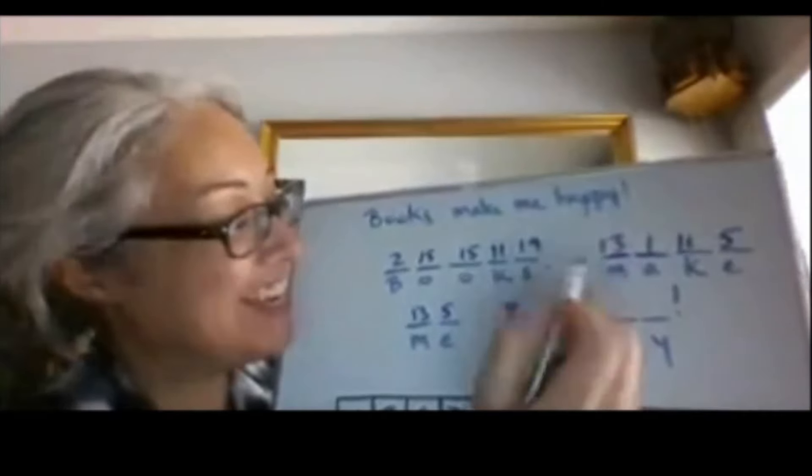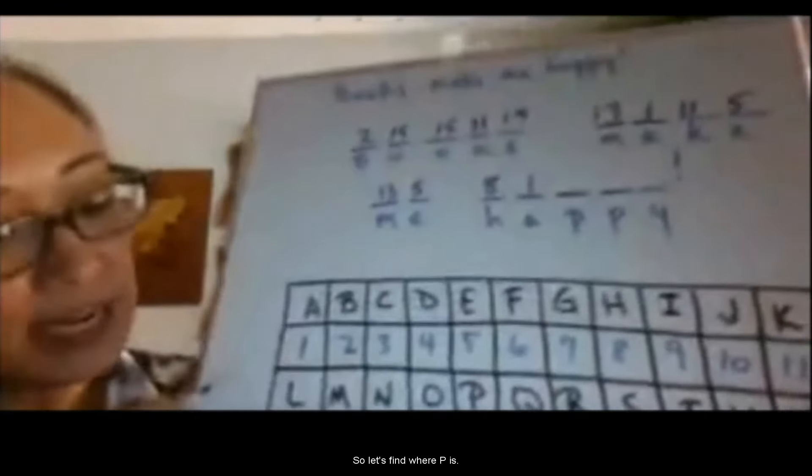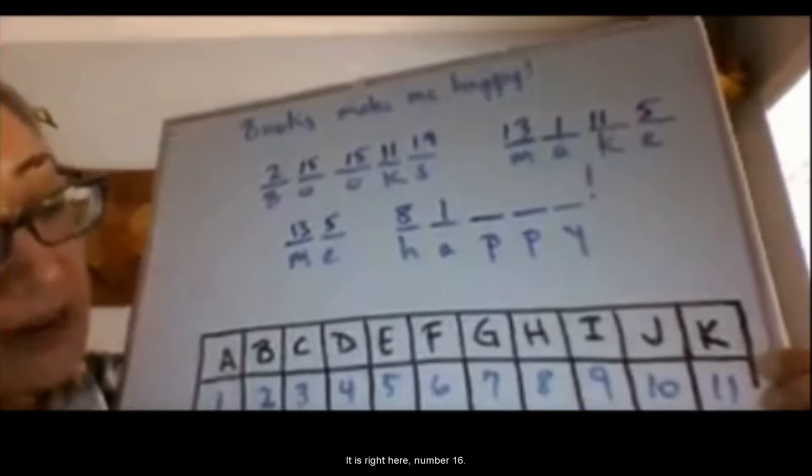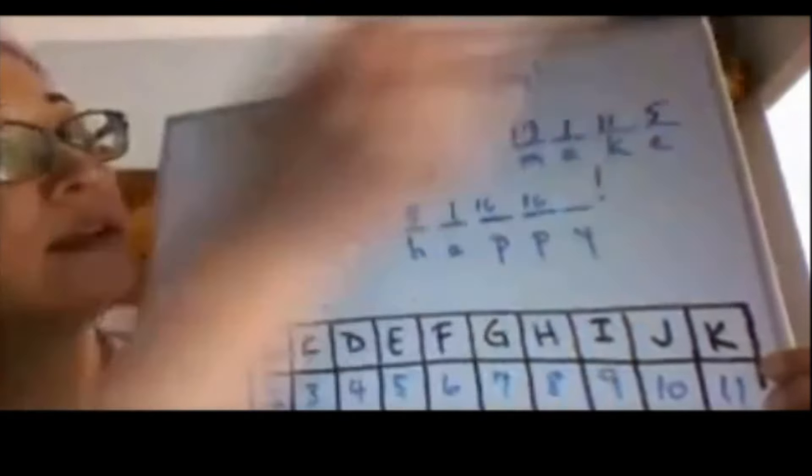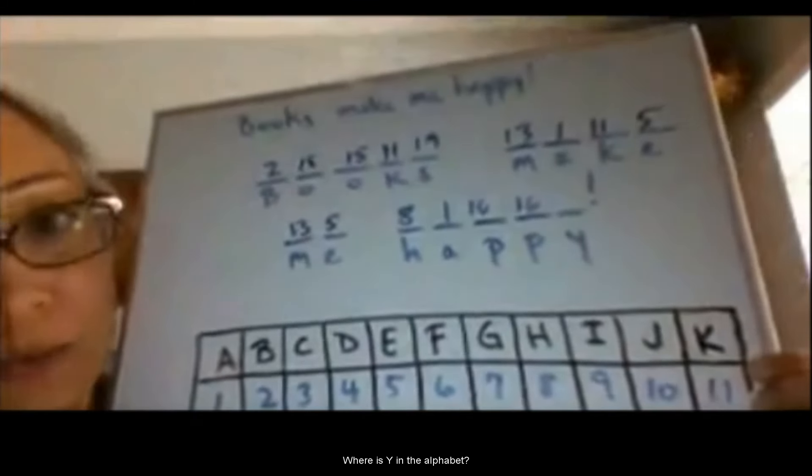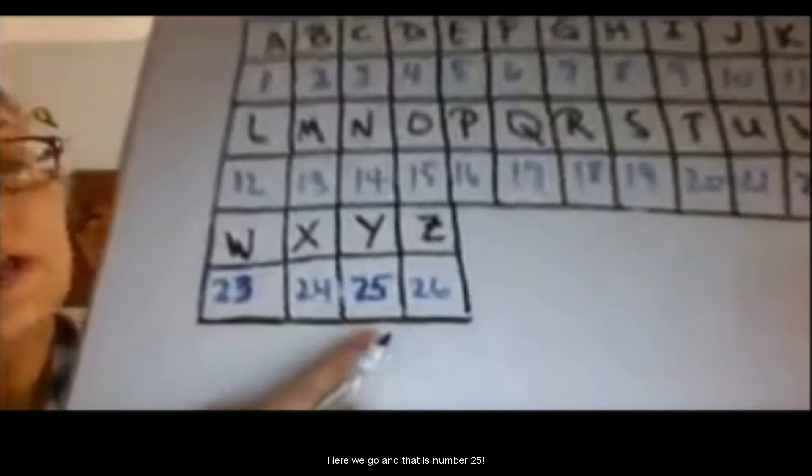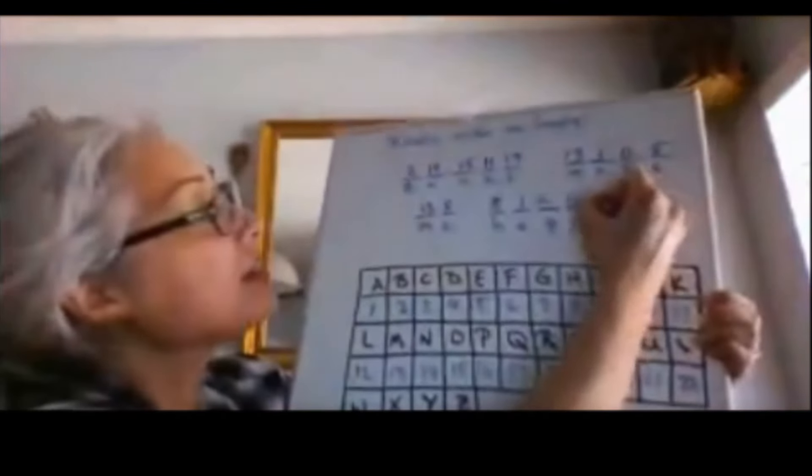Well, we know what A is, right? What is it? 1. And then we have two P's in happy. So let's find where P is. It is right here. Number 16. So let's write down 16 twice. Okay. Y. Where is Y in the alphabet? Right near the bottom. So let's find, here we go. And that is number 25.